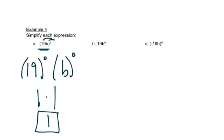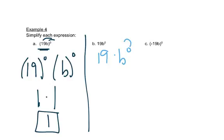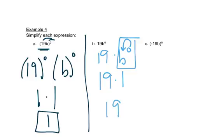In part b we have to be a little bit careful, because this is really 19 times b to the 0. Here the exponent only goes to the b, not to the 19. So this 19 stays 19, but this part becomes 1. So we get 19 times 1, which is 19.